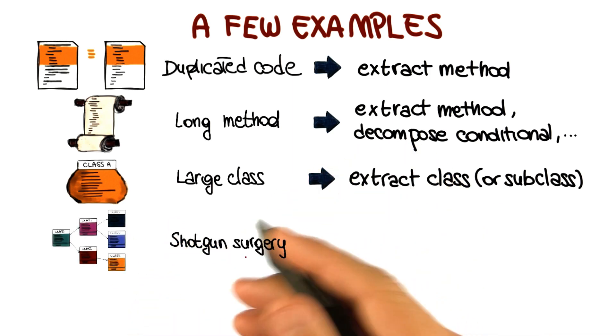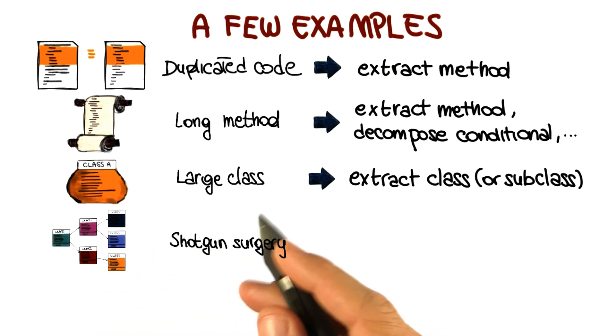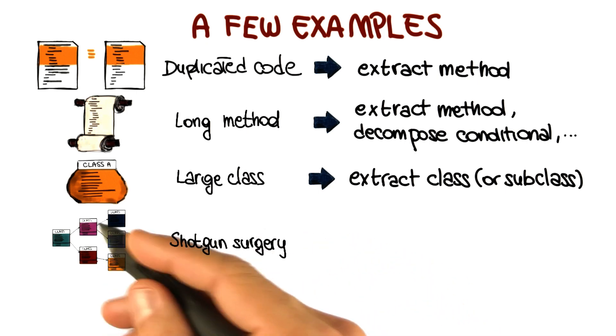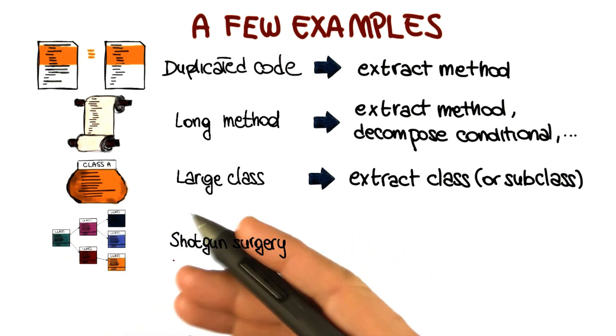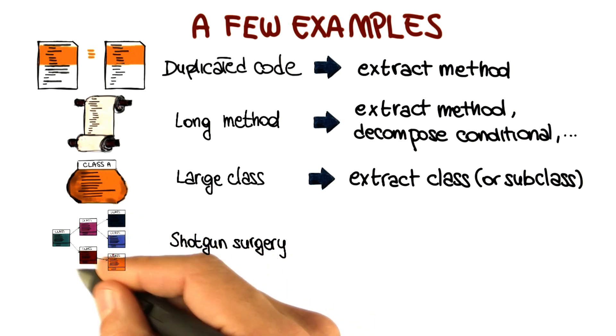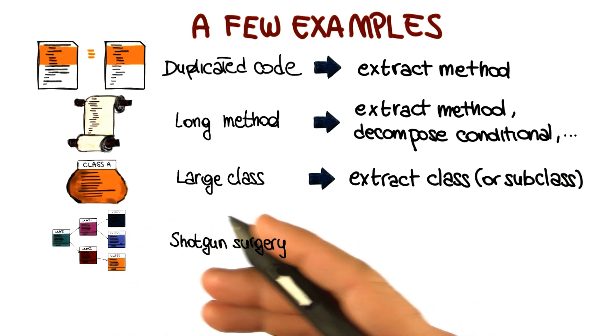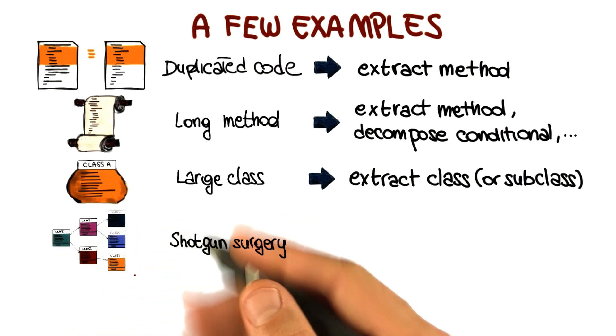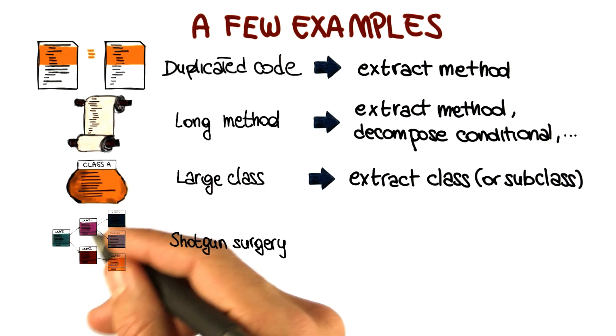Shotgun surgery is an interesting smell, and the case here is that we're in a situation, and it probably happened to you, I mean it definitely happened to me, in which every time you make some kind of change to the system, you have to make many little changes sort of all over the place to many different classes. And this can be a symptom of the fact that the functionality is spread among these different classes. So there's too much coupling between the classes and too little cohesion within the classes.